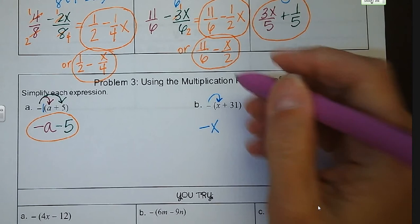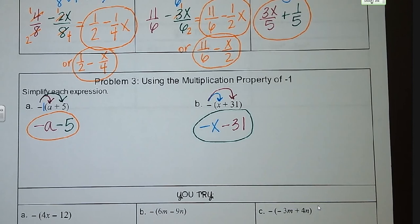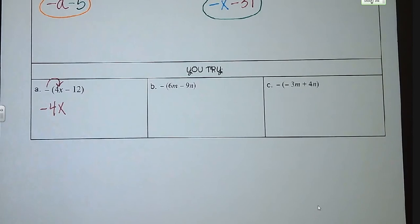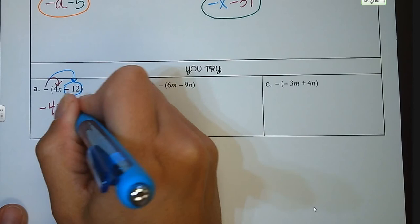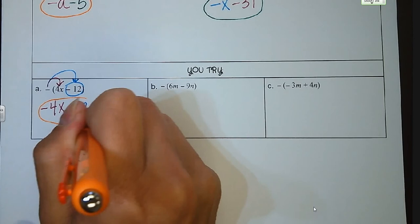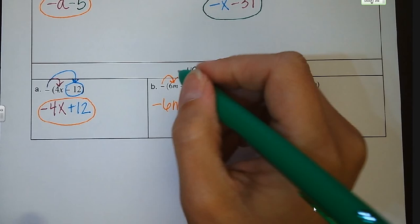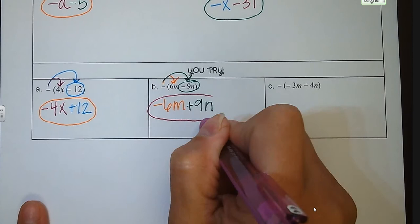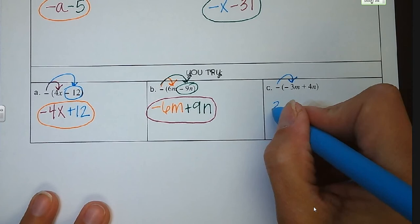Pause the video, give letters A, B, and C a try, and then resume and we'll go over the answers. For letter A, distributing the negative sign: negative 1 times 4X is negative 4X, and negative 1 times negative 12 gives us a positive 12 — negative times negative is positive. Letter B: we have negative 6M, and negative 1 times negative 9 is a positive 9N. Those are not like terms; you cannot combine them. Letter C: negative times negative 3M is a positive 3M, and negative 1 times 4N is a negative 4N, so minus 4N.